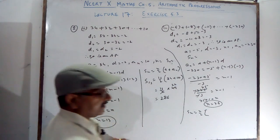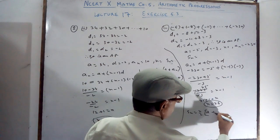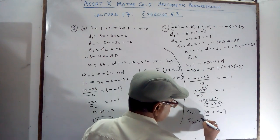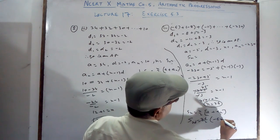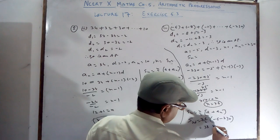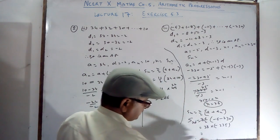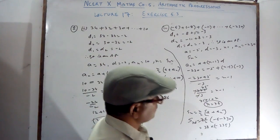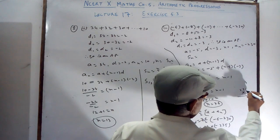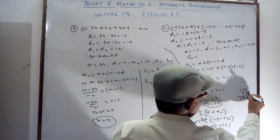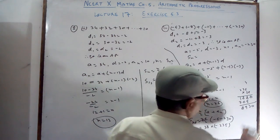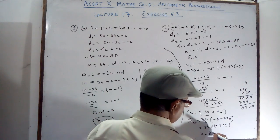For Sn, use Sn equals N by 2 into (A plus AN). So S76 equals 76 by 2 into (minus 5 plus minus 230) equals 38 into minus 235. Multiply these: 38 times 235 gives 8930, so the answer is minus 8930.